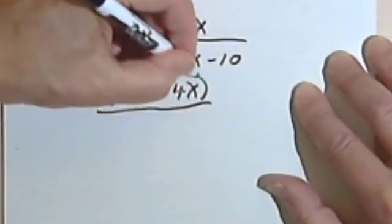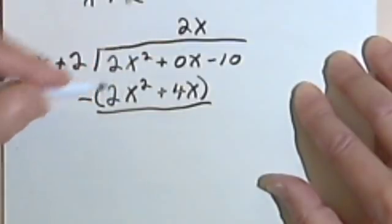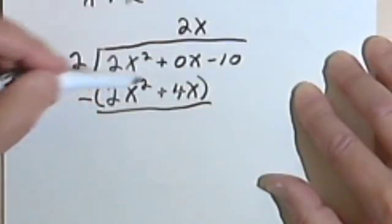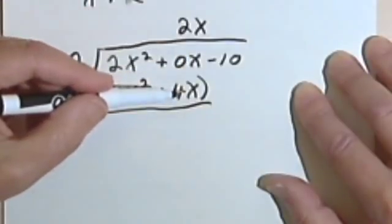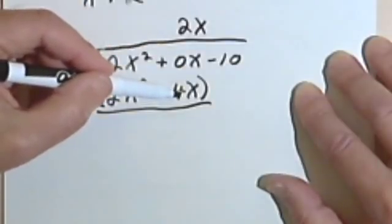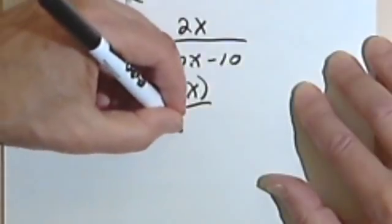And I'm going to subtract. So 2x² - 2x² is 0. And then I've got 0x - 4x. And see, I needed this 0x so I could subtract the 4x from something. So 0x - 4x is just -4x.